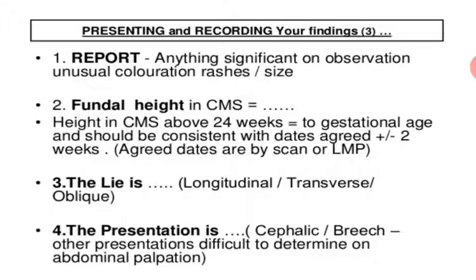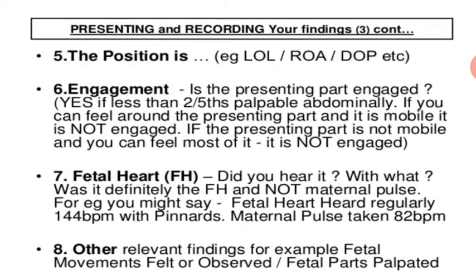When reporting, note anything significant on observation such as unusual coloration, rashes, or size. Document fundal height in centimeters from 24 weeks — measurement should correspond to gestational age plus or minus two weeks. State the lie (longitudinal, transverse, or oblique), presentation (cephalic, breech, or other), position (e.g., left occipital lateral or right occipital anterior), whether the presenting part is engaged, the fetal heart rate and whether it was definitively heard, and any other relevant findings such as fetal movement felt or observed and fetal parts palpable.